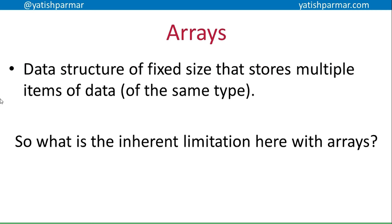We've looked at arrays thus far. An array is a data structure of a fixed size that stores multiple items of data of the same type. So what's the inherent limitation? The obvious one is fixed size — you need to know the size of an array before you declare it, and resizing involves memory operations. Some languages won't let you resize an array because it's supposed to be fixed size. But the one that doesn't stand out, which lots of people skip over, is that all items of data have to be of the same type.